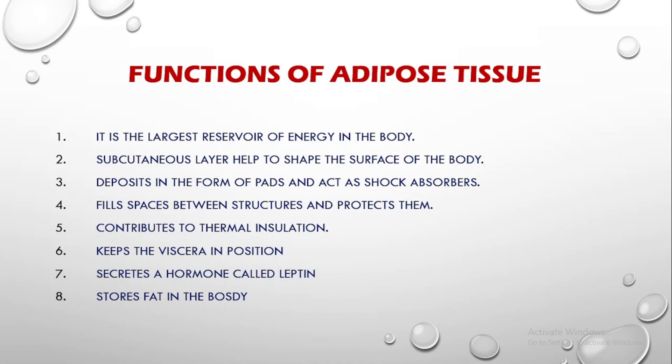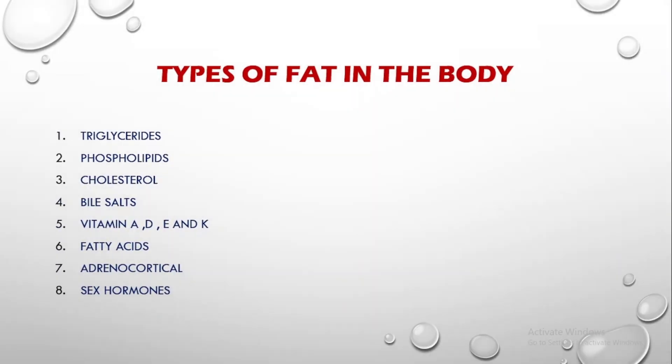What functions does adipose tissue perform? First, they are your energy reservoirs in the body. Second, they are found in the subcutaneous layer of the skin, so they shape up the surface of the body giving it a very smooth surface. These deposits are in the form of pads and can act as shock absorbers, found in your heels, toe pads, and feet. They fill spaces between structures and protect them, keeping them in place. A very important function is to maintain the thermal insulation of the body. The viscera are held in position by adipose tissue, and there is a hormone called leptin which is secreted by them. Of course, all the fat in the body is stored in adipose tissue.